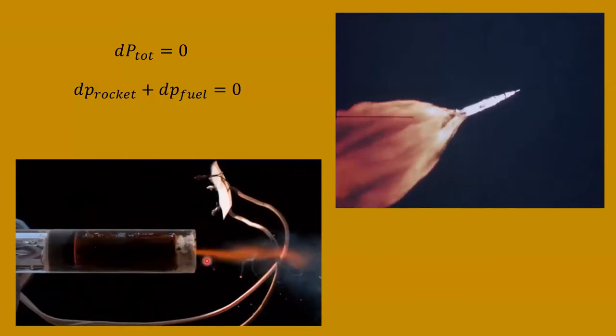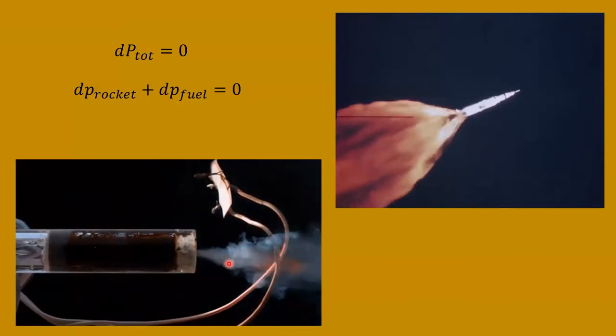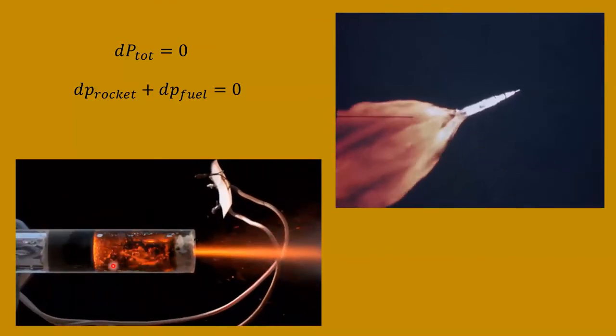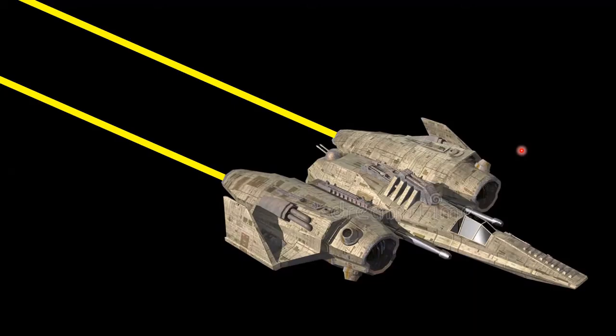So this equation right here says that the change in the total momentum of the system must be zero if it's isolated. And that means the sum of the changes of the individual parts. The fuel is acquiring momentum, and there's going to be a corresponding change in the momentum of the rocket. And those two quantities sum to zero.